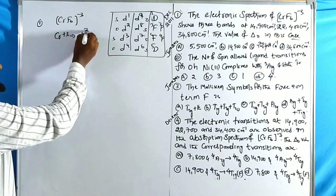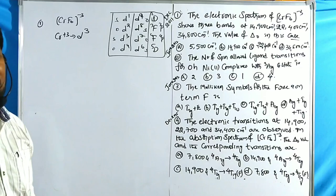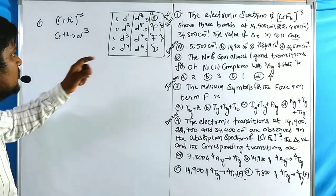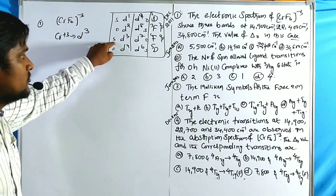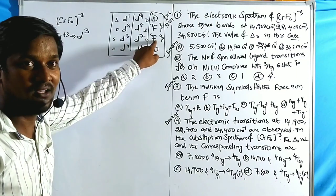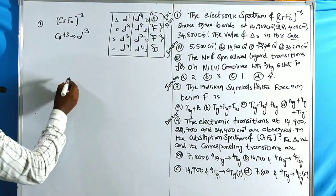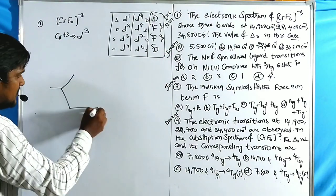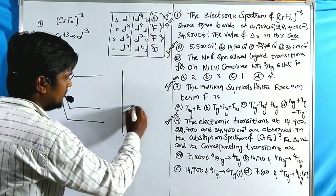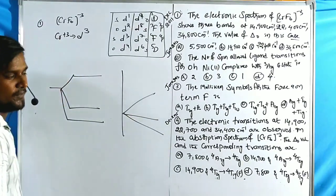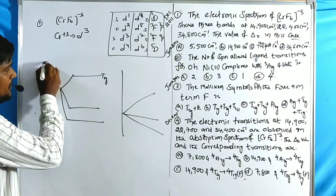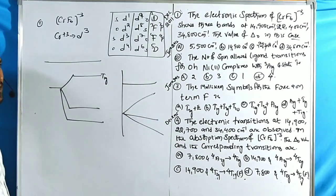Chromium in CrF₆³⁻ is Cr³⁺, which has a d3 configuration (4s1d3d5 → three electrons lost → d3). d3 is 'similar' to the octahedral f-term splitting. In the f-term splitting diagram, t₁g, t₂g, and a₂g appear, with t₁g representing the p-state somewhere. There is no crossover point in similar diagrams.